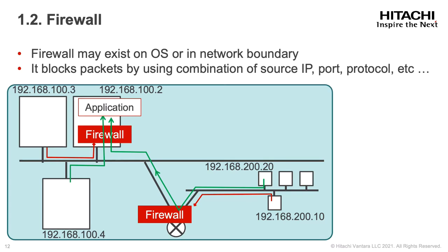I will briefly explain use cases for stable and unique source IPs. The first use case is firewall. Firewalls may exist on an OS or in a network boundary. They block traffic by using a combination of source IP, port, protocol, and so on, to only allow a certain set of systems to access a certain set of systems and avoid malicious access. When adding new systems, these firewall rules will need to be updated, which requires that source IPs are stable and unique, at least within certain IP ranges.